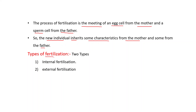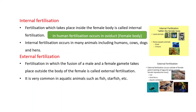There are two types of fertilization: internal fertilization and external fertilization. Fertilization which takes place inside the female body is called internal fertilization. For example, in humans, fertilization occurs in the oviduct, which is present inside the female body and is part of the female reproductive organ.